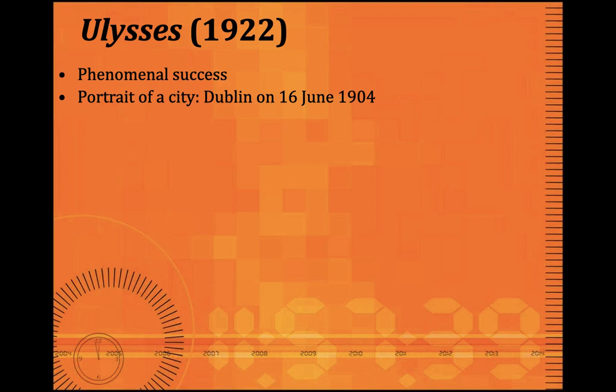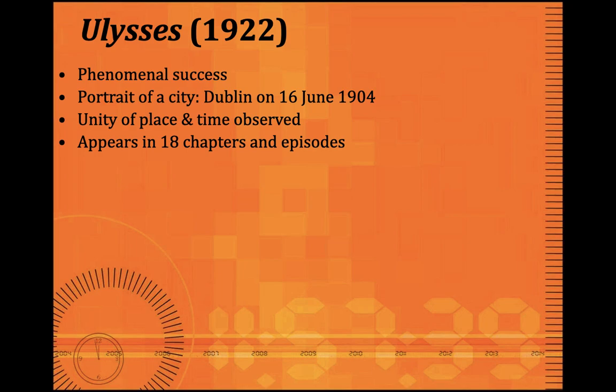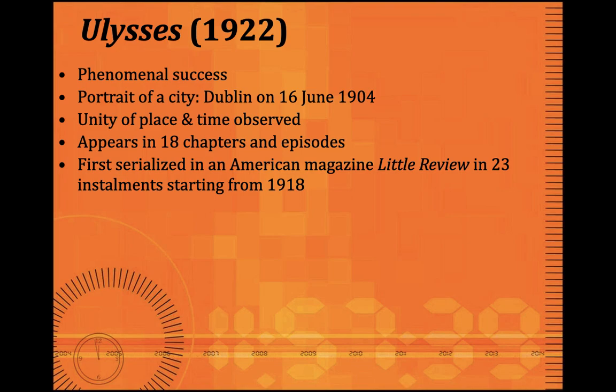The protagonist Stephen Daedalus is a carryover from A Portrait of the Artist as a Young Man. This is a novel where ironically the unity of time and place are observed, highlighting the fact that this is not a tragedy or a classical work. It appears in 18 chapters or episodes. There are three parts in the novel with Homeric divisions, and these 18 chapters are spread over those three parts.